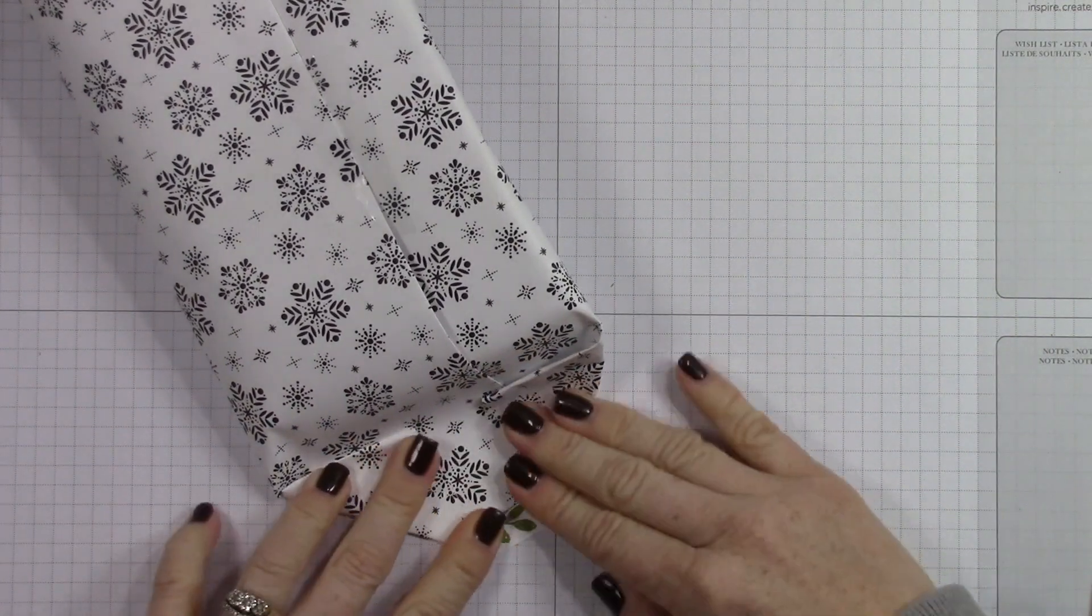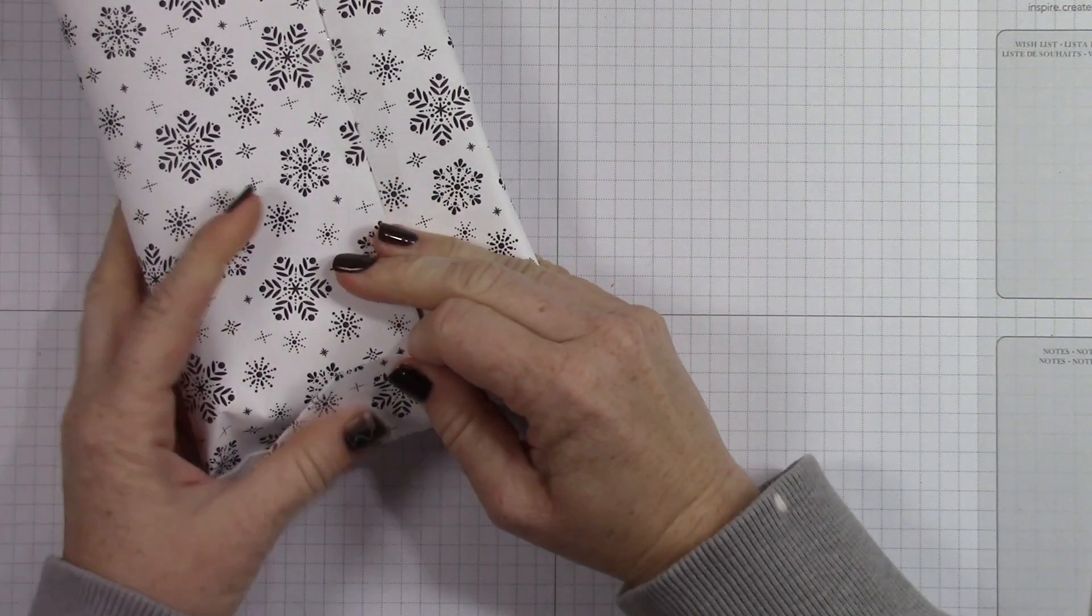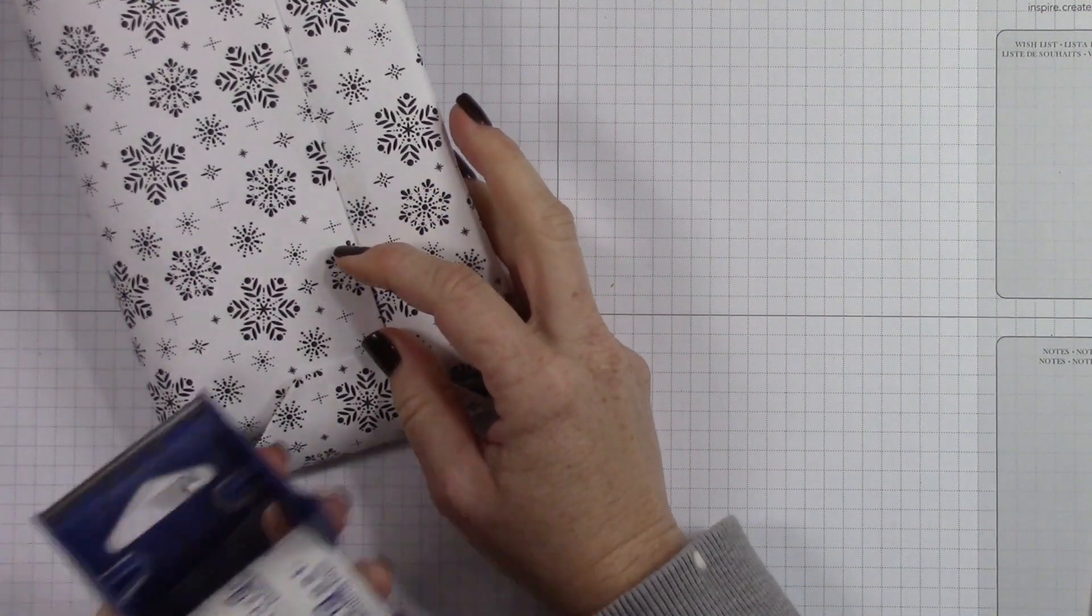So I'm just showing how I wrap. I don't know if anyone needs to know how to wrap, but basically I make like a little point at the end and then I fold it up. Now because this is designer series paper...